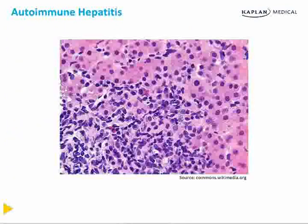Here's a classic example of a liver biopsy with autoimmune hepatitis. Notice the massive number of plasma cells and lymphocytes at the portal tract.